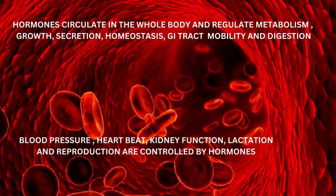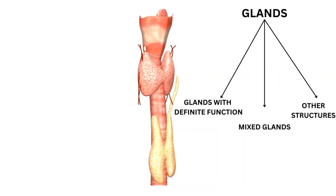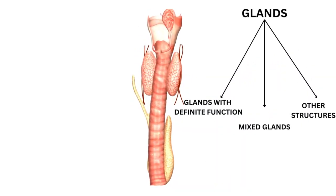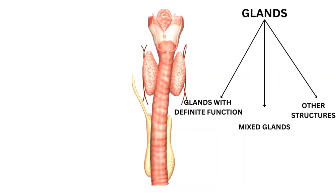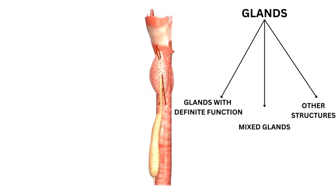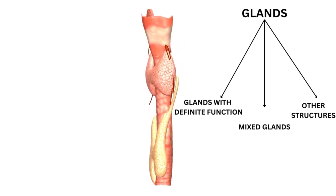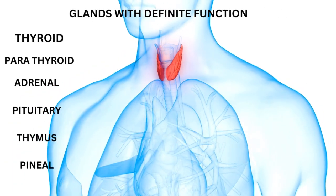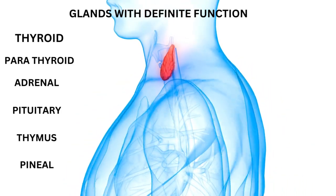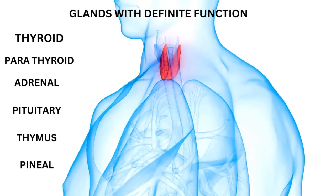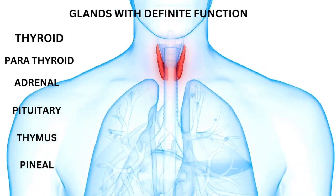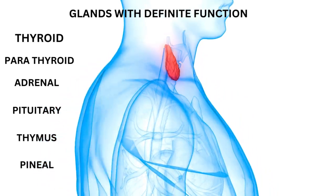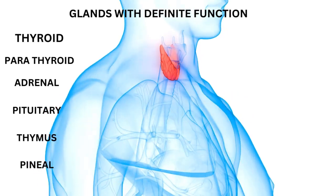The thyroid gland belongs to the category of glands with different functions, which are divided into three groups: glands with different function, mixed, and other structures. The glands with different function include the thyroid, parathyroid, adrenal, pituitary, thymus, and pineal. This class will concentrate on the thyroid gland.